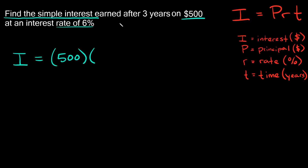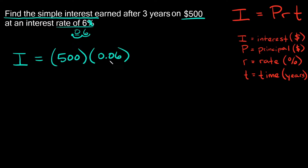An easy way to convert a percent to a decimal is just dropping your percent sign, so we just have the number six. Then move the decimal two places to the left. Since we have a blank place value there, you just put a zero. So six percent is the same thing as 0.06. So P is 500, R is 0.06, and T is three, because three years.